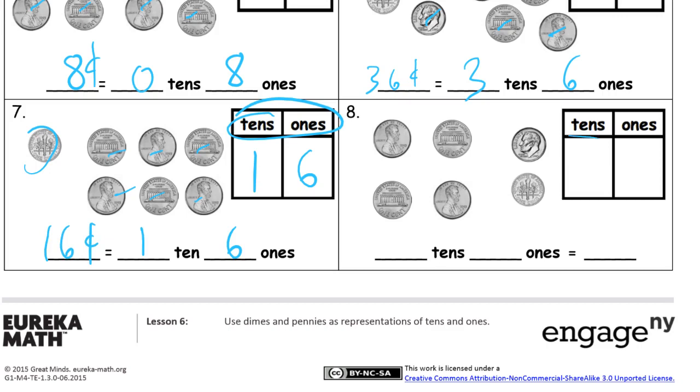And then we have tens and ones here again. These are our tens. Dimes are tens. So there's two of those. And then the ones, there's one, two, three, four of those. So that's two tens, four ones, twenty-four cents.